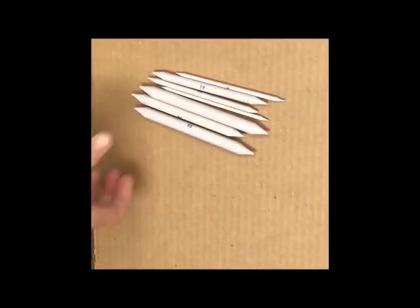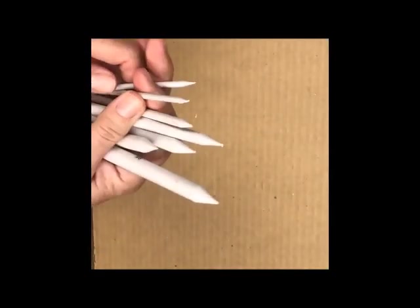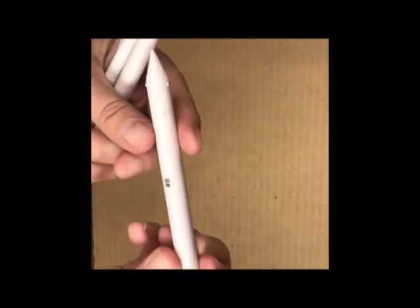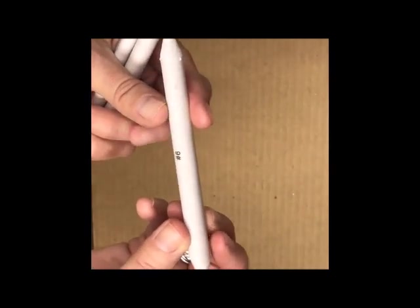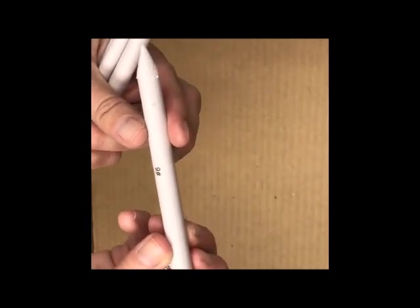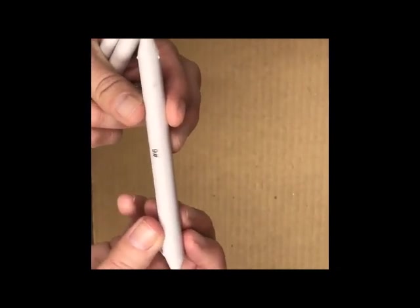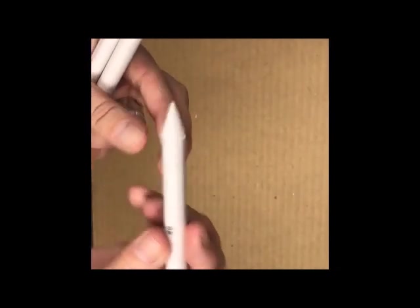Let's talk about this great blending stump set we carry here at Craft Warehouse. A blending stump is compressed paper and you use it on dry media. So that would be graphite, colored pencil, pastel, charcoal, and it's for blending.